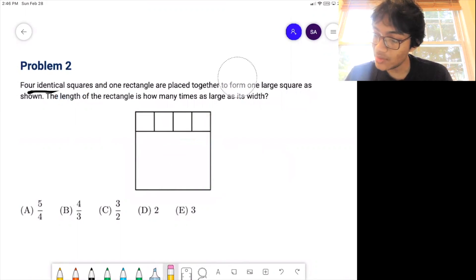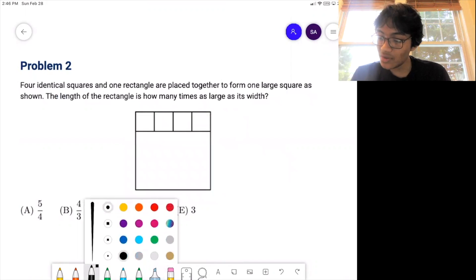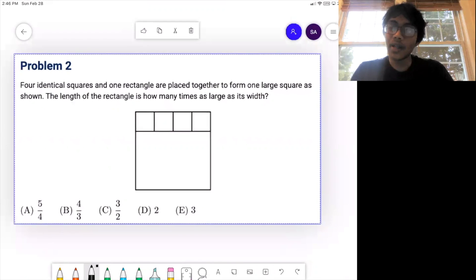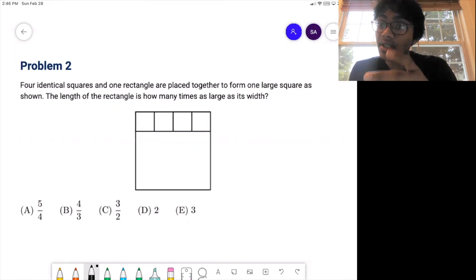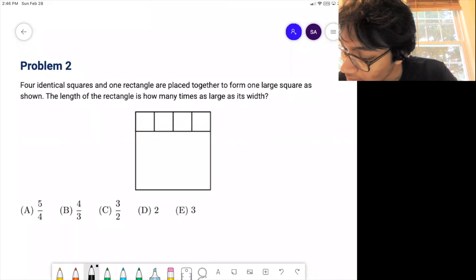Alright, so how are we going to do this question? Well, whenever you're tasked with something like this that has no numbers, it's good to introduce pseudo numbers, or as I like to call them, variables. Let's call all of these x, since they all have the same side length.